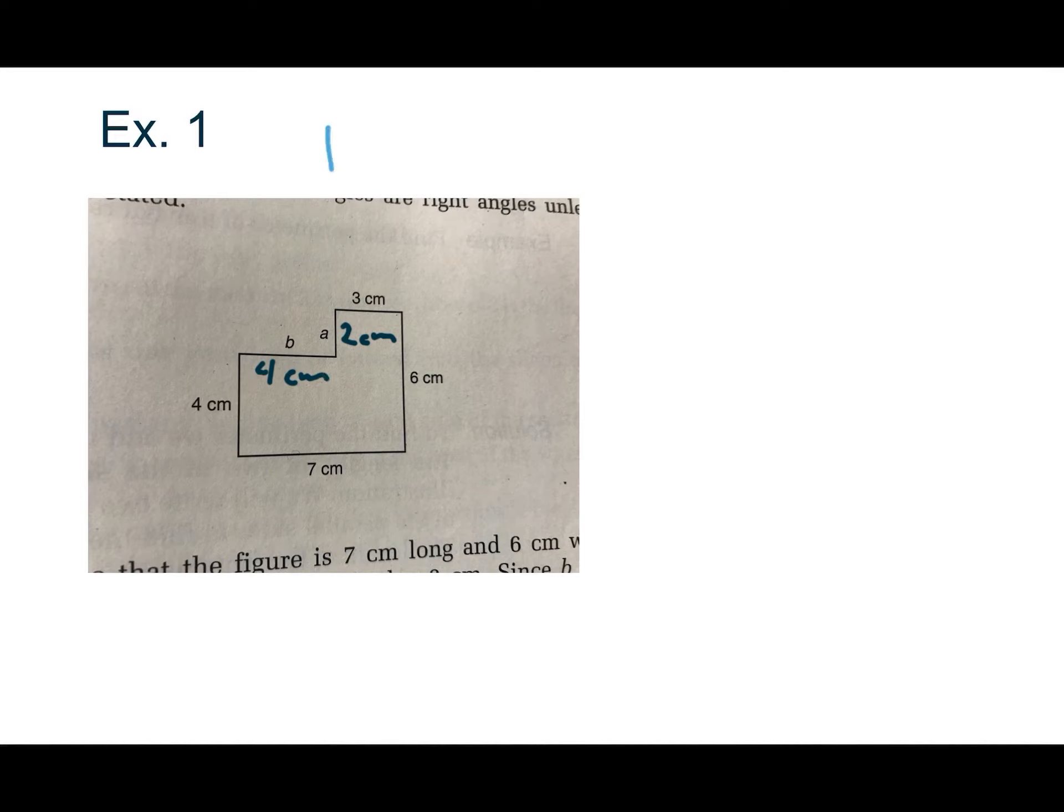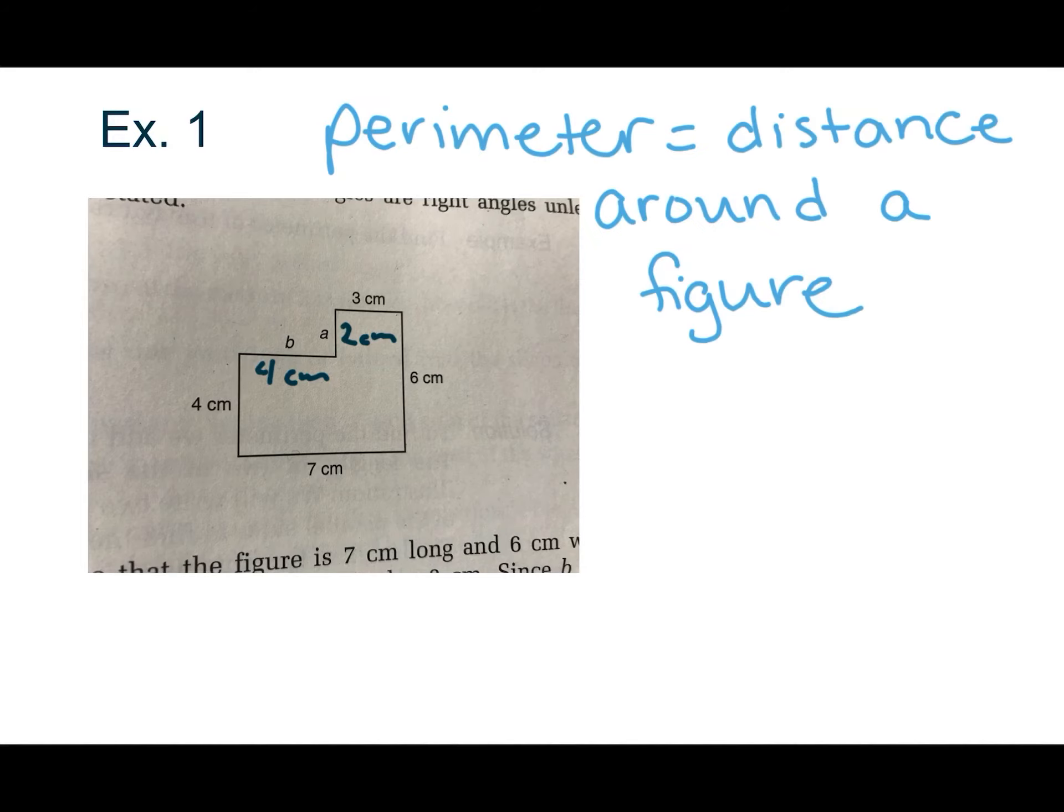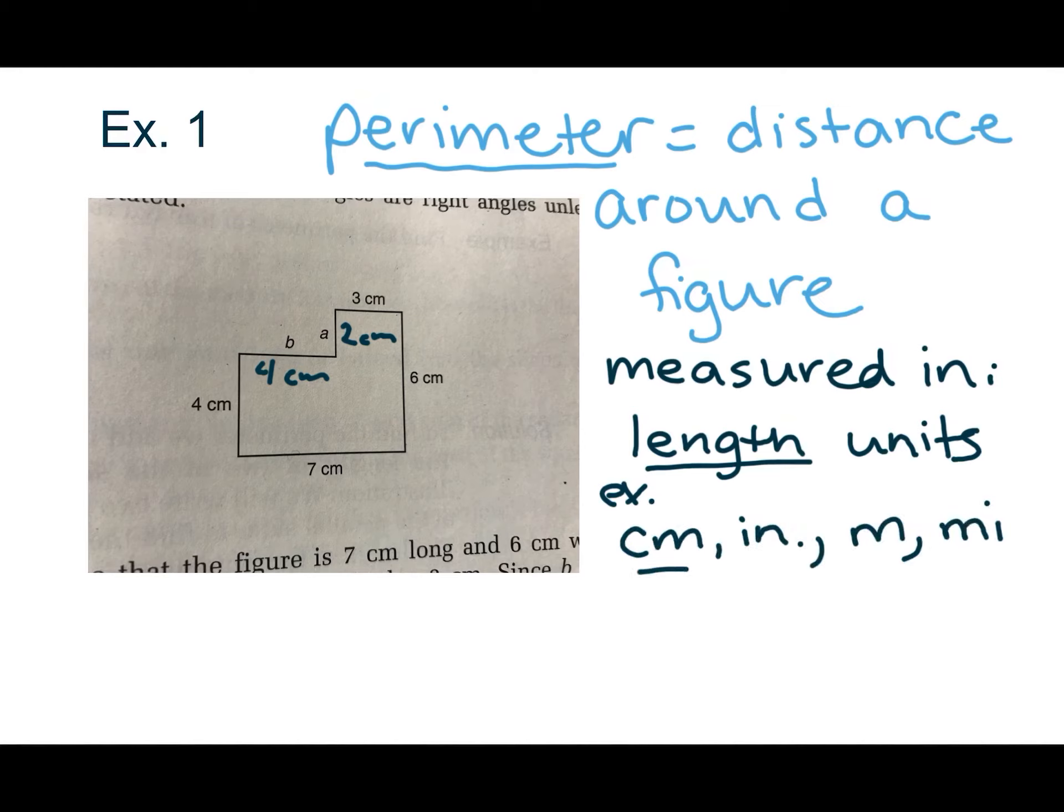Now, recall that perimeter is the distance around a figure. So if I were just to walk around, if I were tiny, because these are centimeters, and I were to just walk around this figure, then it would be the total distance that I walked around. So it's measured in the same units that we would measure length. And some examples of that would be centimeters, inches, meters, miles, depending on whether you're using metric or standard.